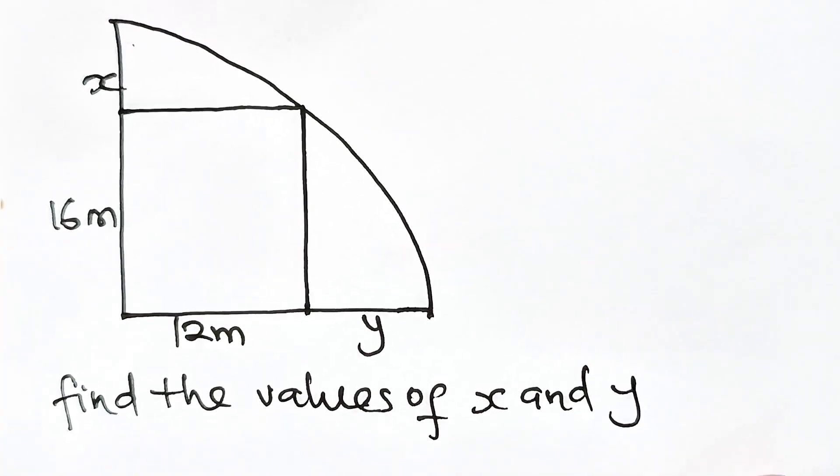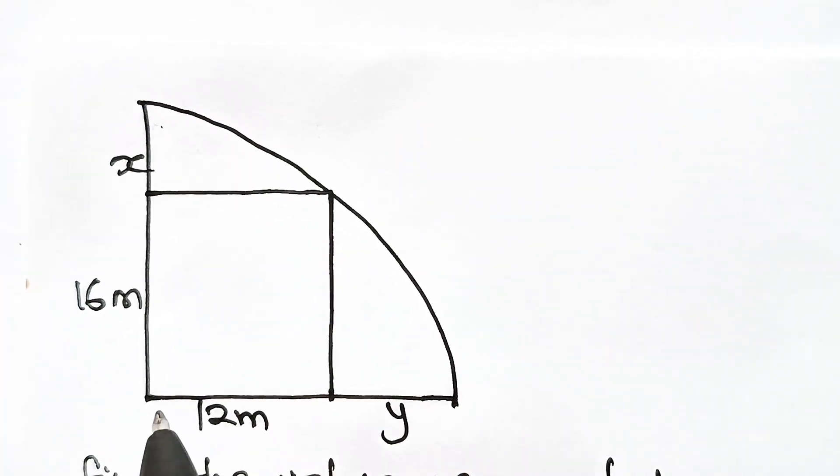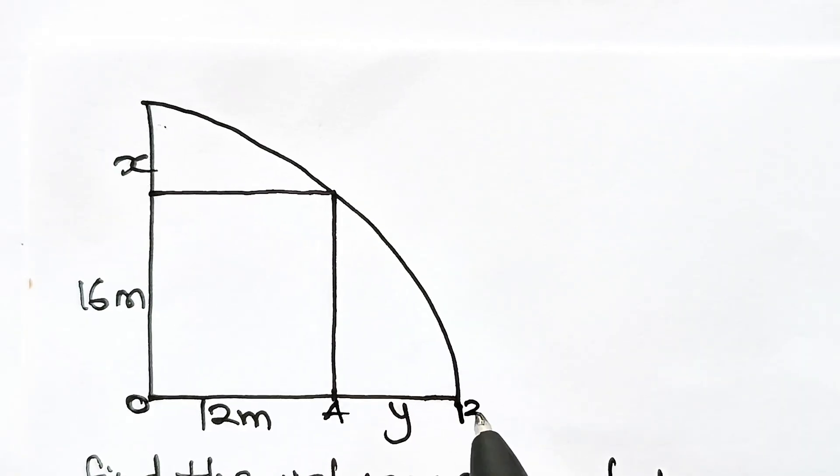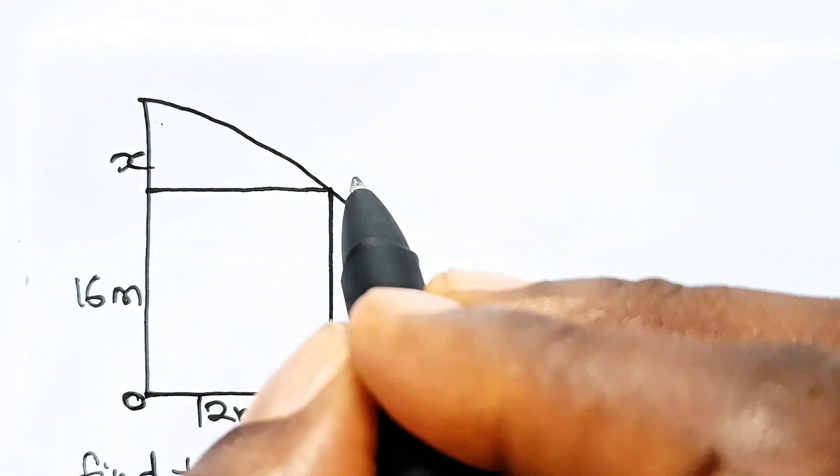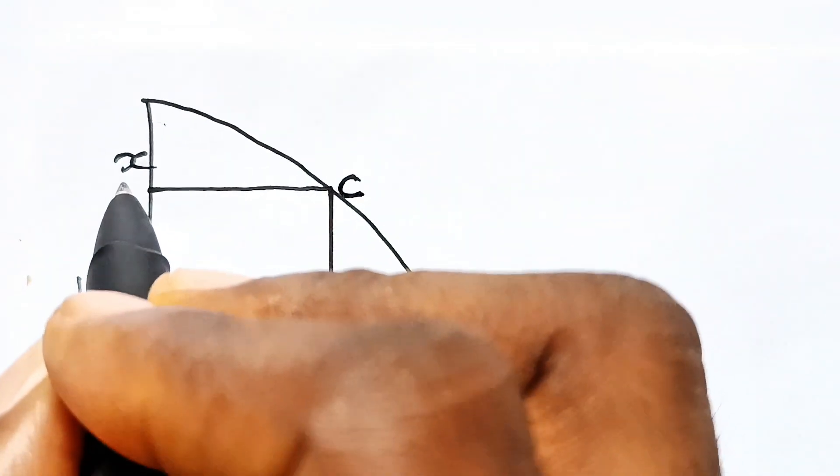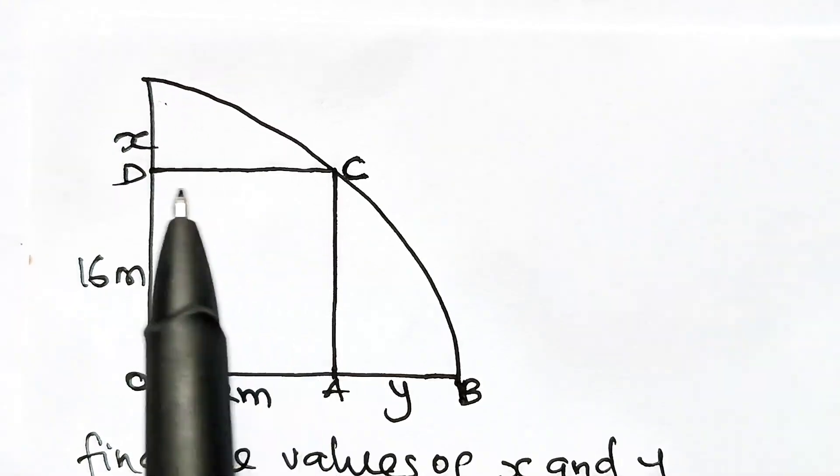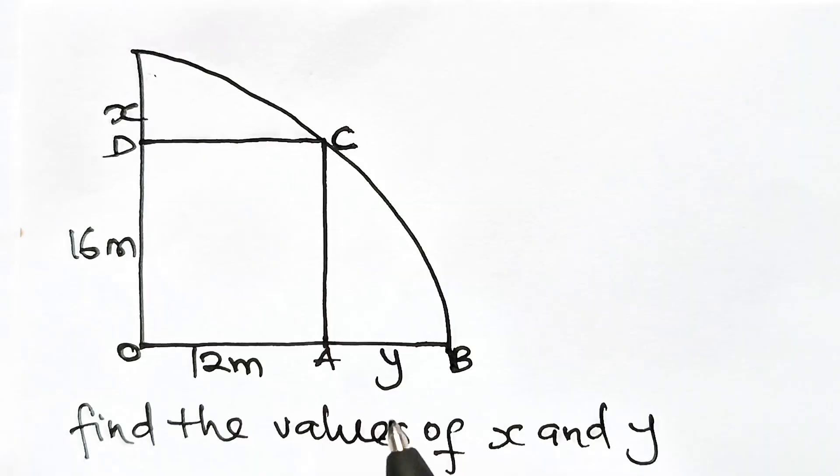Let's add more information to the given diagram. This is the center of the circle. So if we call this A, call this point B, this point C, and this point D, we know that OADC is a rectangle.